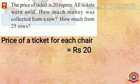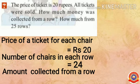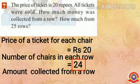The number of chairs in each row is 24. Can you find how much money was collected from a row by selling the tickets? To find out this, multiply the number of chairs in each row with the price of each ticket.